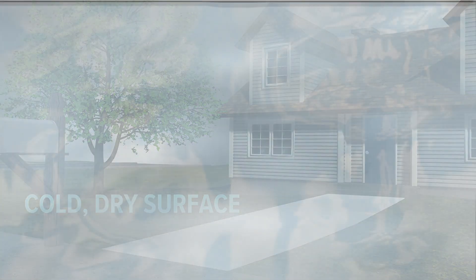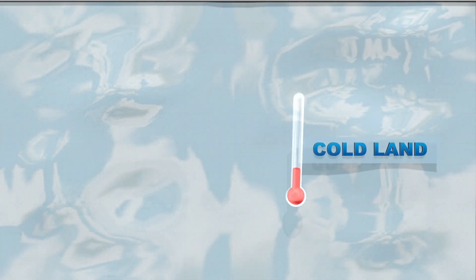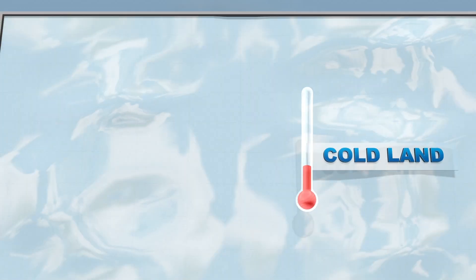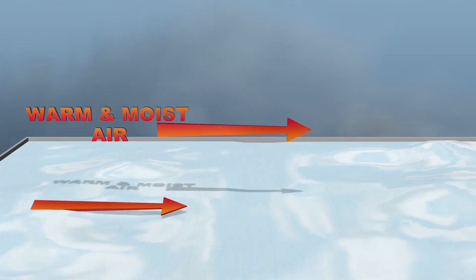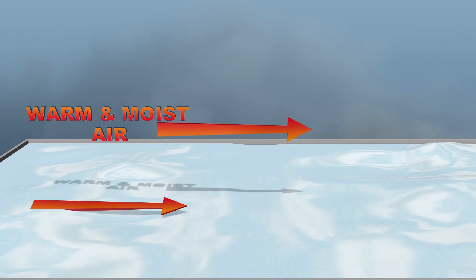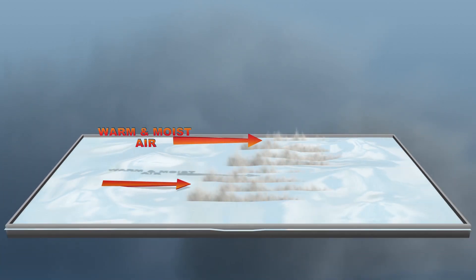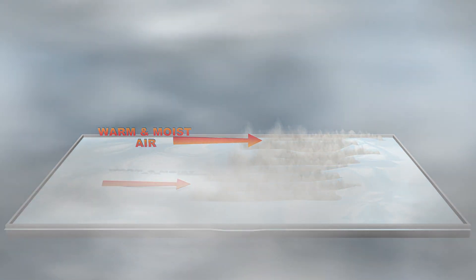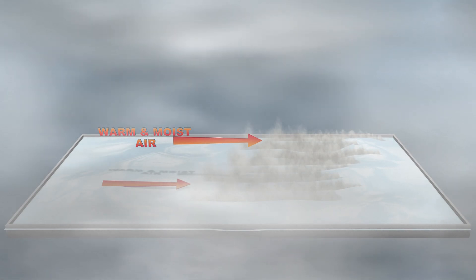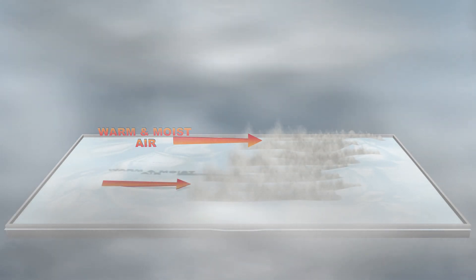And finally, we have advection fog, which as opposed to radiation fog can only occur with windy conditions. This type of fog occurs when a warm wind blows over a cold, moist surface, and the contact between the two causes the dew point to rise and forms fog.